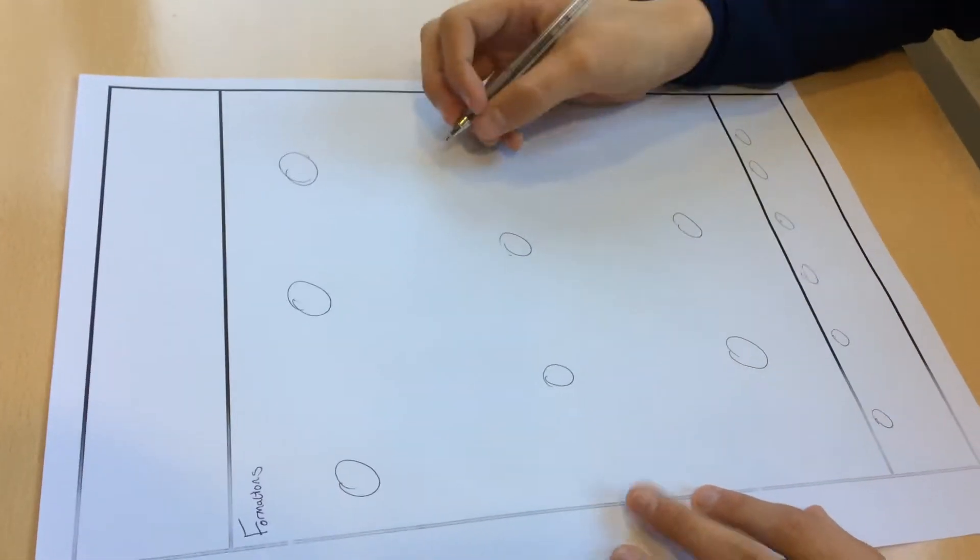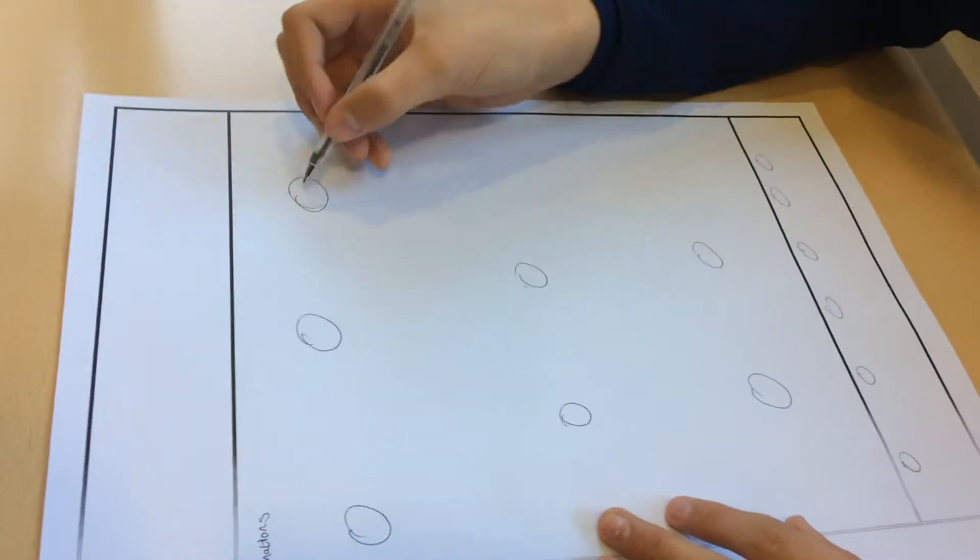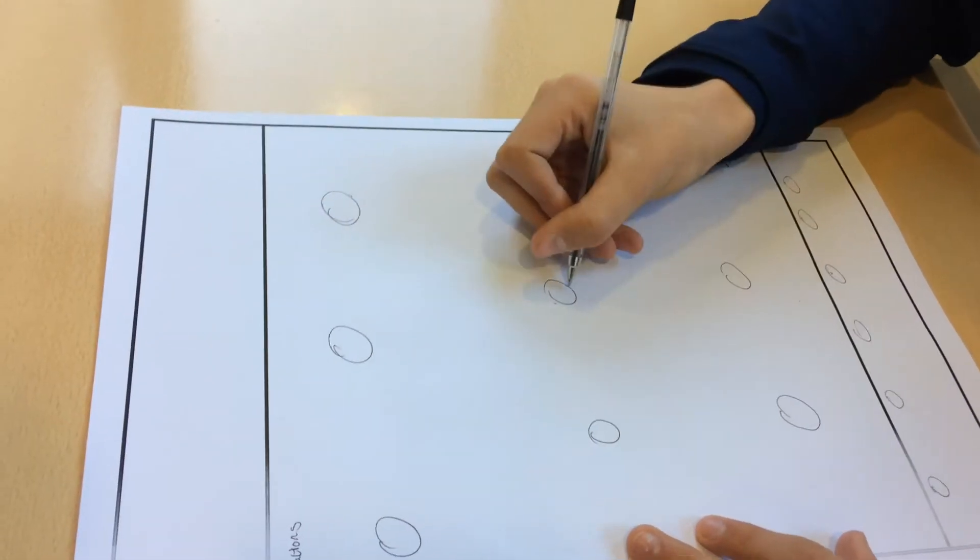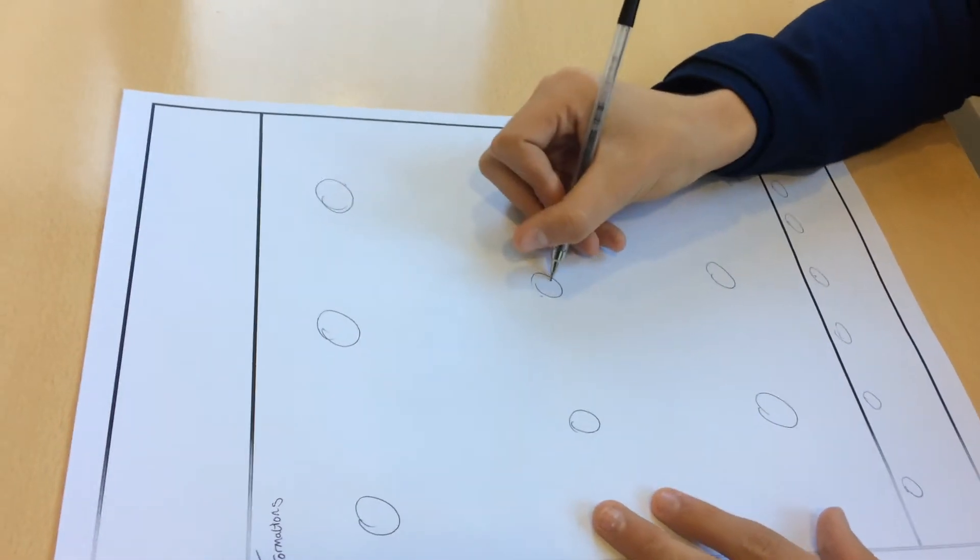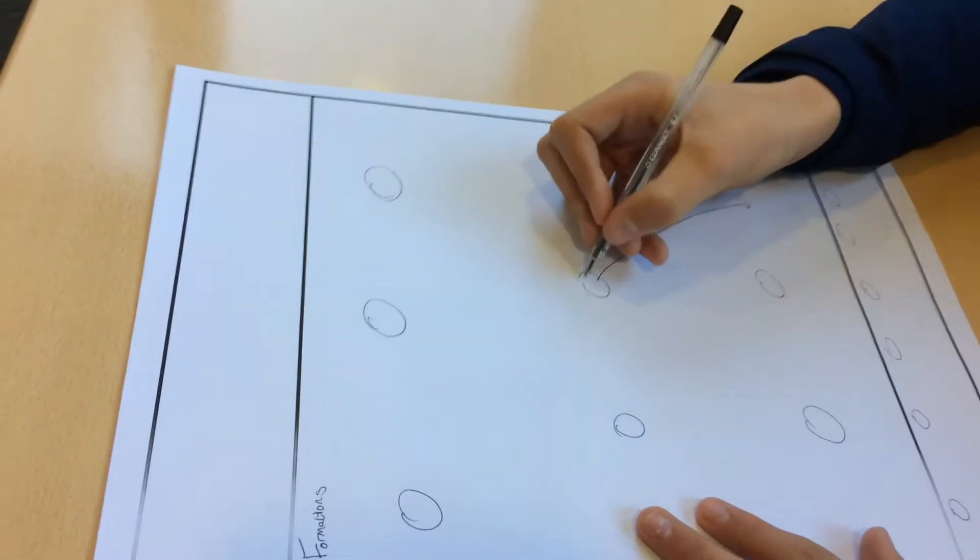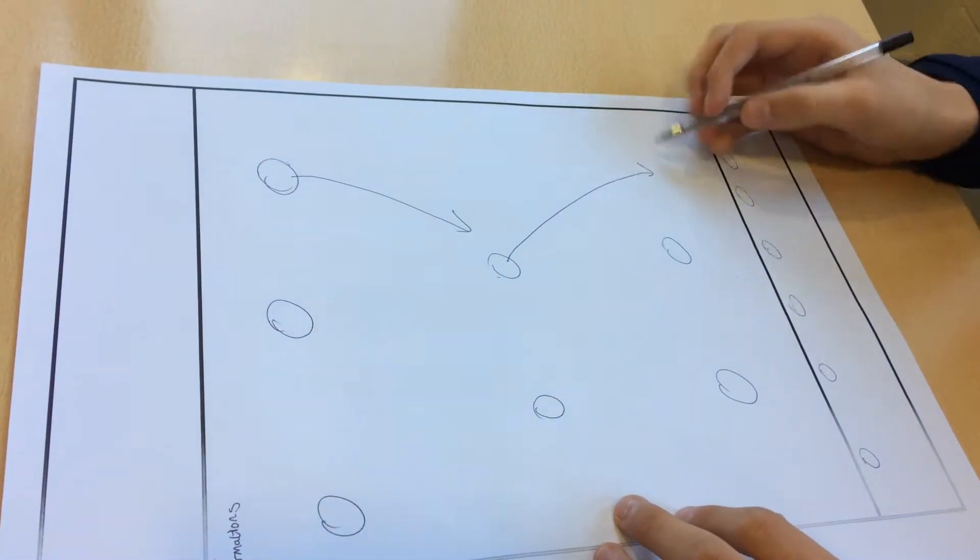But say we lost possession. To adopt a defending formation, you should all drop back—this player should drop back one, this player should drop back one—so then you have three in defense.